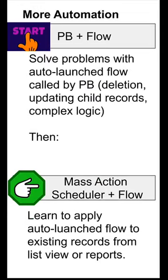Now you're going to need to learn more automation. We already learned Process Builder, so now we need to learn things we can't do just with Process Builder, and that's where flow comes in. You use something called auto-launch flow, which is the simplest type of lightning flow, and you can do things like delete a record when something happens, or do a loop and update all the child records when something happens to the parent. You can implement complex logic that depends on other values in ways that aren't just a simple formula. Learn Process Builder plus flow, then apply the same trick with Mass Action Scheduler to apply flows to existing records on a list view or a report. Very powerful.